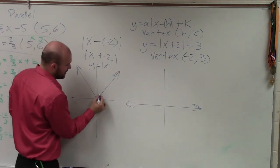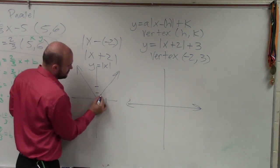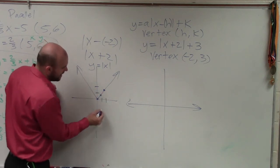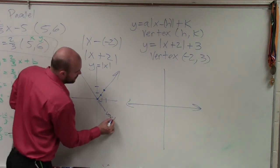The slope is over 1, up 1. Over 2, up 2. All right? Now, this minimum point is what we call the vertex.